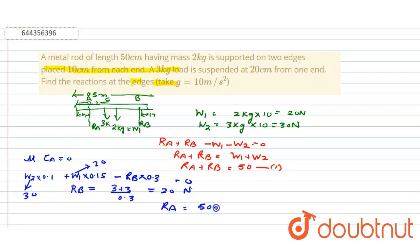That is 30 newtons. So what is the answer? The answer is RA equal to 30 newtons and RB equal to 20 newtons.